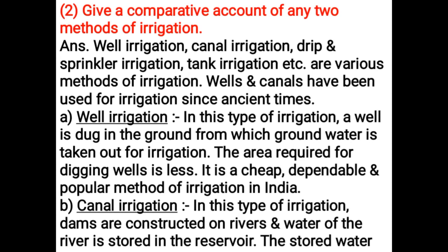Well irrigation, canal irrigation, drip and sprinkler irrigation, and tank irrigation are various methods of irrigation. Wells and canals have been used since ancient times. In well irrigation, a well is dug in the ground from which groundwater is taken out for irrigation. The area required is less, making it a cheap, dependable, and popular method of irrigation in India.